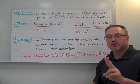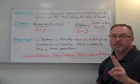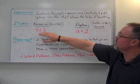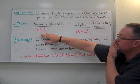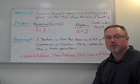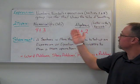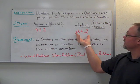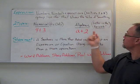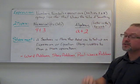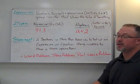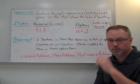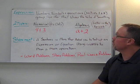There are two types of expressions in math. You can have a numerical expression, which is numbers only — for example, 4 plus 3. You can have an algebraic expression, which is what we're moving into — for example, a plus 2, where the letter is the variable. Anytime you have a letter in there, it's considered an algebraic expression.